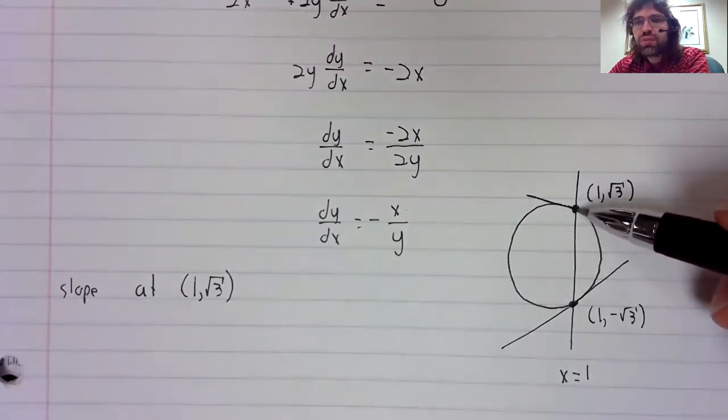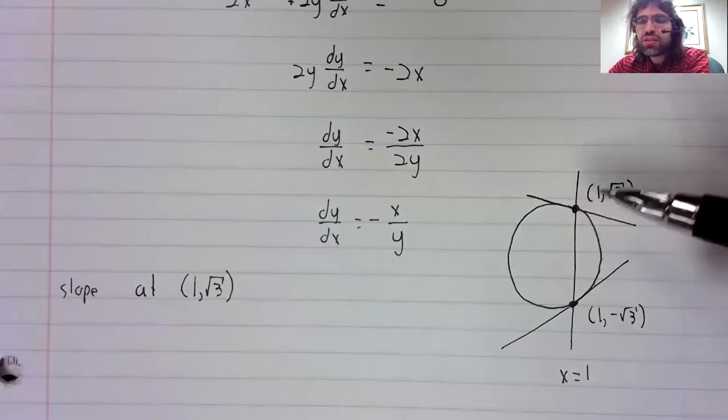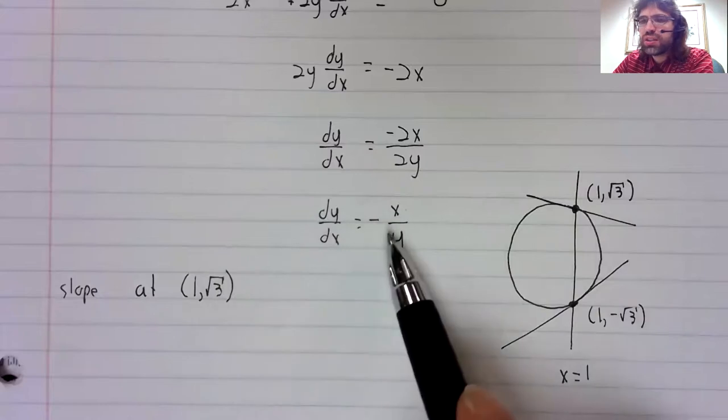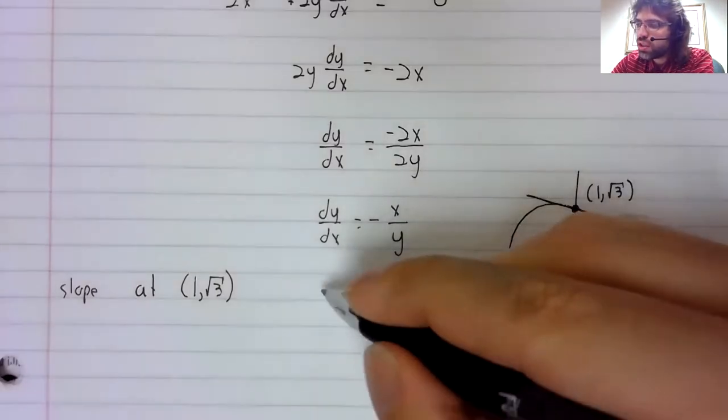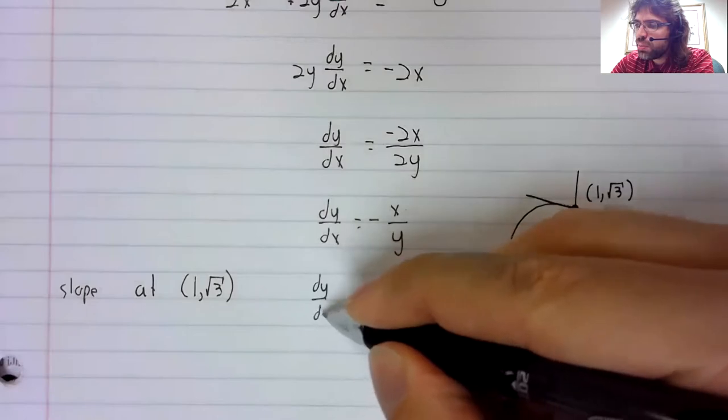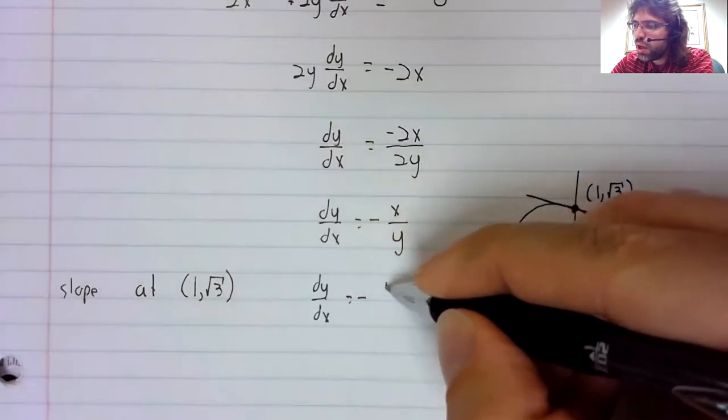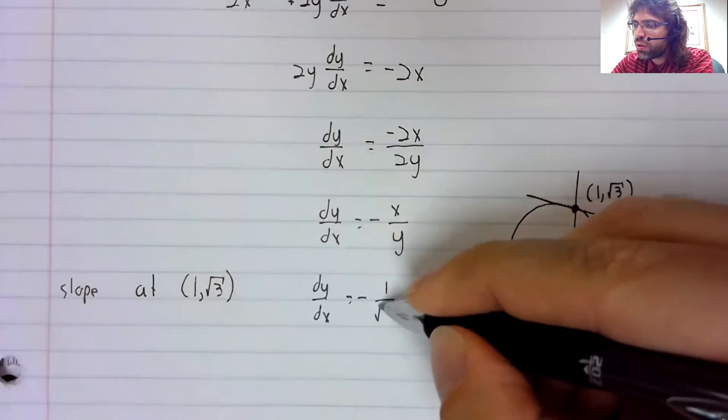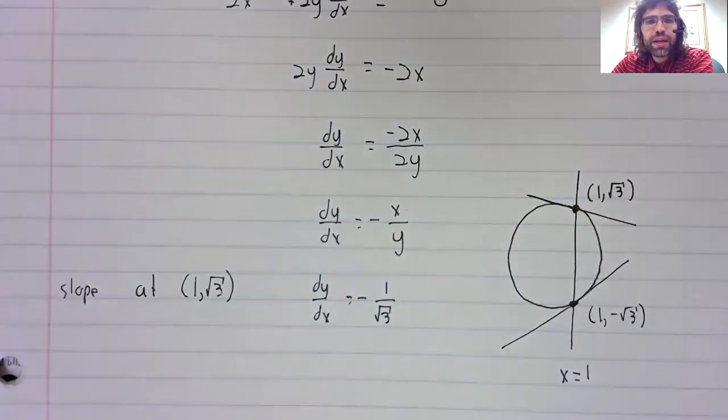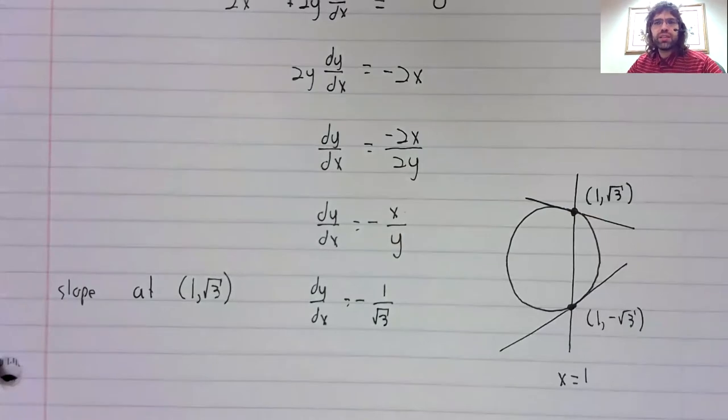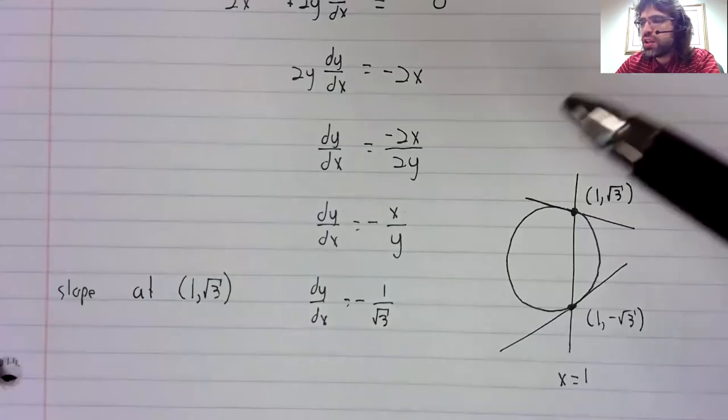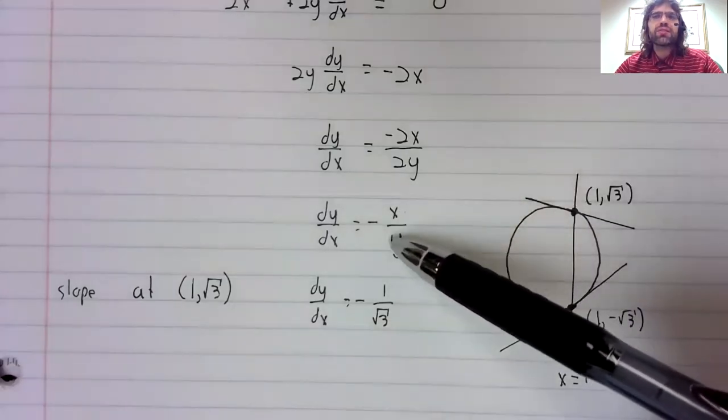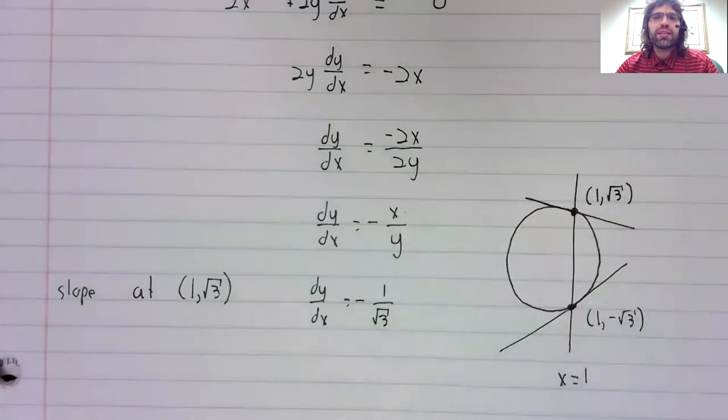Asking the derivative at this point makes perfect sense. And we can plug these into this equation and get dy/dx is negative one over the square root of three. So it's normal and expected to do implicit differentiation and wind up with both x's and y's.